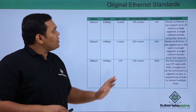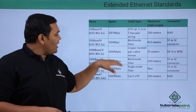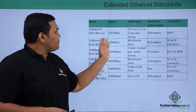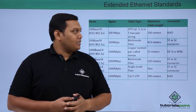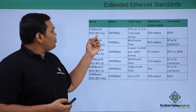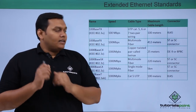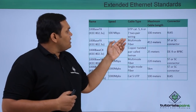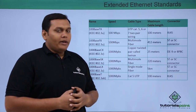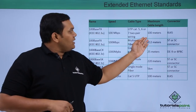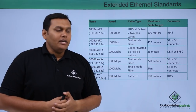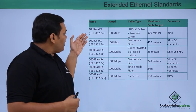Moving to the advanced or extended Ethernet standards, we have 100BaseTX, based on 802.3u Fast Ethernet. It has a speed of 100 Mbps, uses UTP Category 5, 6, or 7 cable with 2-pair wiring, has a maximum length of 100 meters, and connects via an RJ45 connector.